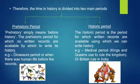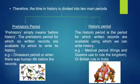Therefore, time in history is divided into two main periods: the prehistoric period and the historic period. Prehistoric simply means before history. The prehistoric period is the period for which no written records are available by which to write its history. That means nobody was able to write any record in the older period which could be taken as a base to study further and write as history of that particular period.